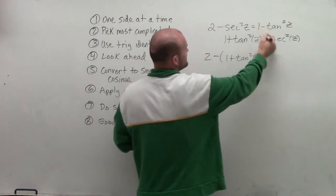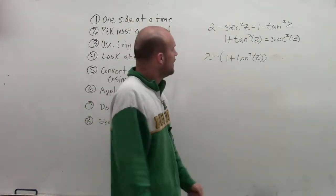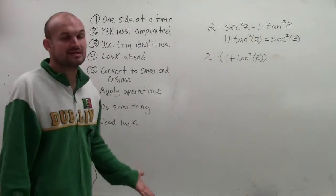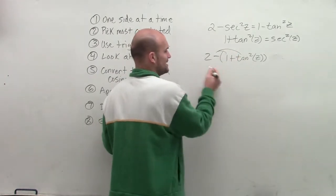And I'm just going to kind of stop writing the equals for my journey because I'm just going to work on simplifying this left side. So now what I have here is I replace the secant squared with 1 plus tangent squared of z because I used the Pythagorean identity.